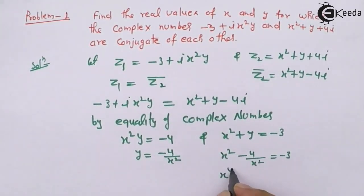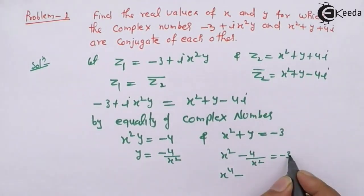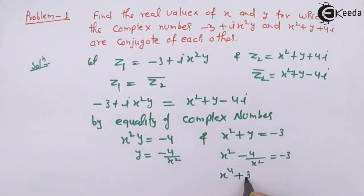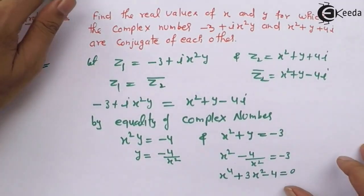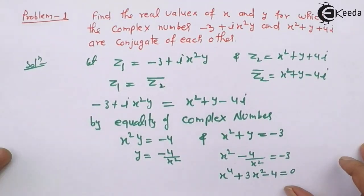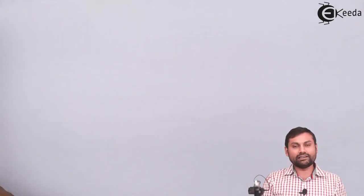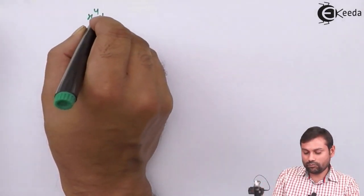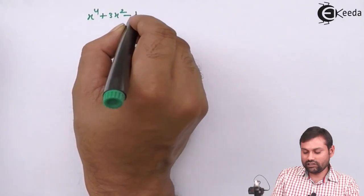Cross multiply करेंगे तो क्या मिलेगा — x⁴ minus 4, यह इस तरफ लाएँगे तो plus हो जाएगा — आपका x⁴ plus 3x² minus 4 equals to 0। By quadratic equation को कैसे solve करते हैं — directly इसको solve कर सकते हो। Question हमें मिला है: x⁴ plus 3x² minus 4 equals to 0।